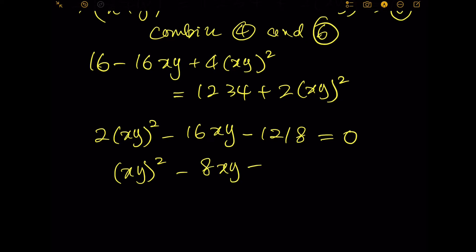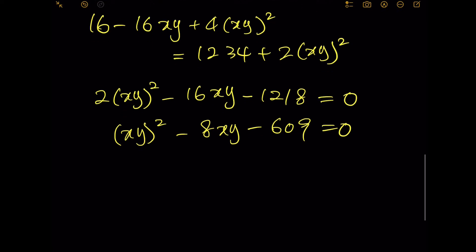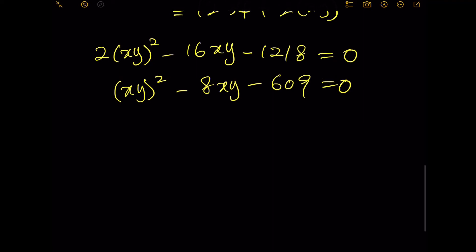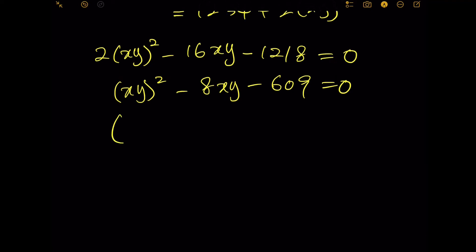Obviously this is a quadratic equation. Experienced people may be able to factor it directly. I will show you how. Let's assume we can factor directly, so xy times xy. The two numbers multiply to get 609, which is 29 times 21.